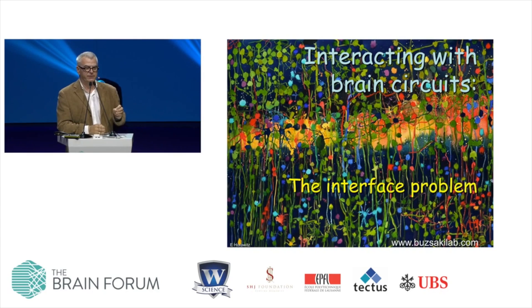At this very moment, 50% of the spikes in your brain are contributed by less than 10% of the neurons. And this diligent 10% of neurons will also contribute 50% of your spikes tonight. But that's only half of your brain performance. In order to understand the entire performance the brain is capable of, you have to record from the very large number of neurons contributing the other half. This is one justification why we are striving, optical or electrical, to record from large numbers of neurons.